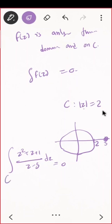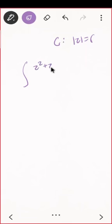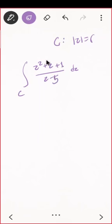If instead the contour is |z| = 6, then the singularity at z = 5 lies inside the contour. So how do you solve this? We need to remember the Cauchy integral formula, since the singularity now lies within the contour.